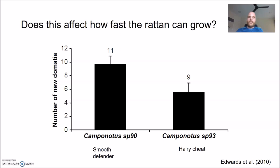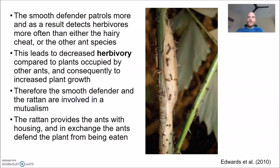We can then see whether this affects how fast the rattan grows. Indeed, plants inhabited by the smooth defender grow faster and have more new domatia than those inhabited by the hairy cheat. Overall: the smooth defender patrols more, encounters herbivores more often, resulting in less herbivory and increased plant growth. We can definitely say that the smooth defender and the rattan are involved in a mutualism. The hairy cheat might also be involved in a mutualism, just not as good a partner for the rattan compared to the smooth defender.